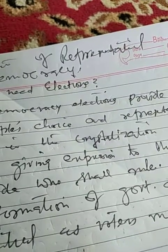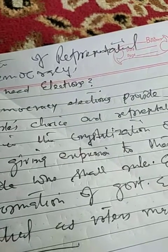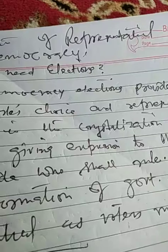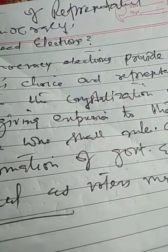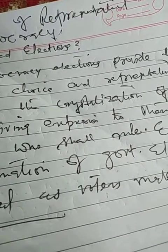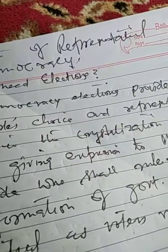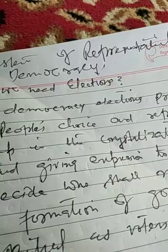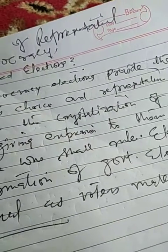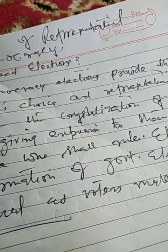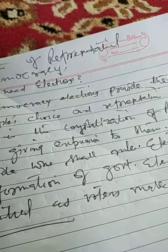Elections are a process through which peripheral groups are included. Elections overcome linguistic, caste-based, and regional identities. Over time, among all these groups, elections create a common interest, bringing them into the mainstream. Although there are conflicts among them, these are channeled into a kind of cooperation and competition through elections.